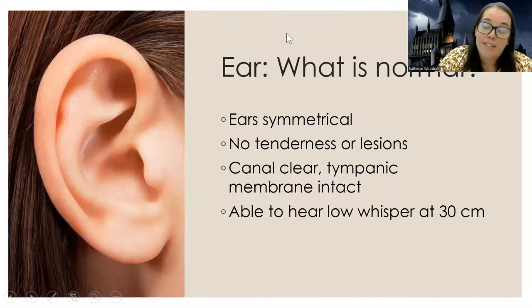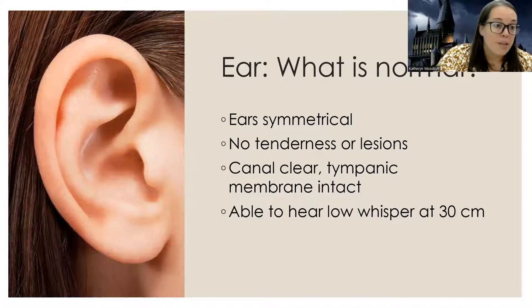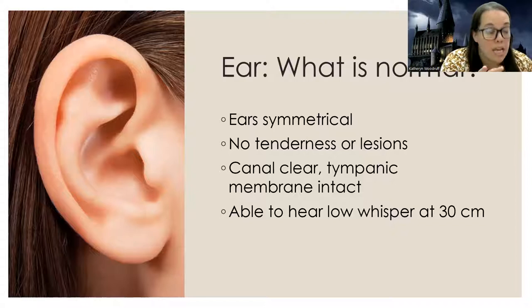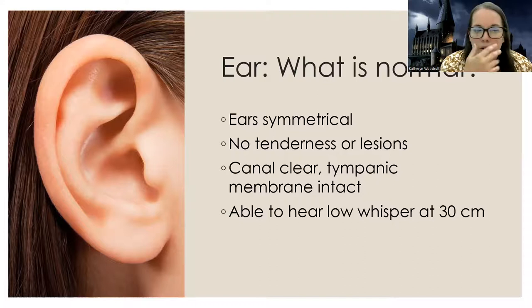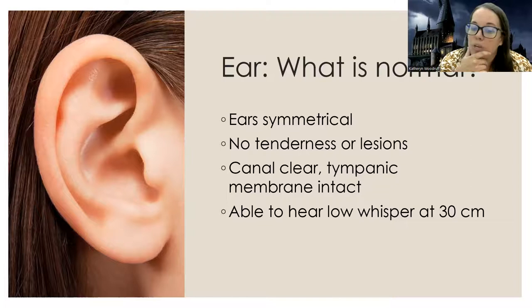Now let's get into the ear — we're halfway there. What's normal in the ears? The ear should be symmetrical. A fun fact is that each ear is unique to the individual like a fingerprint — no one else has the same ear as you. Other normal findings: no tenderness or lesions, the canal should be clear, the tympanic membrane should be intact and not ruptured, and you should be able to hear a low whisper at 30 centimeters.